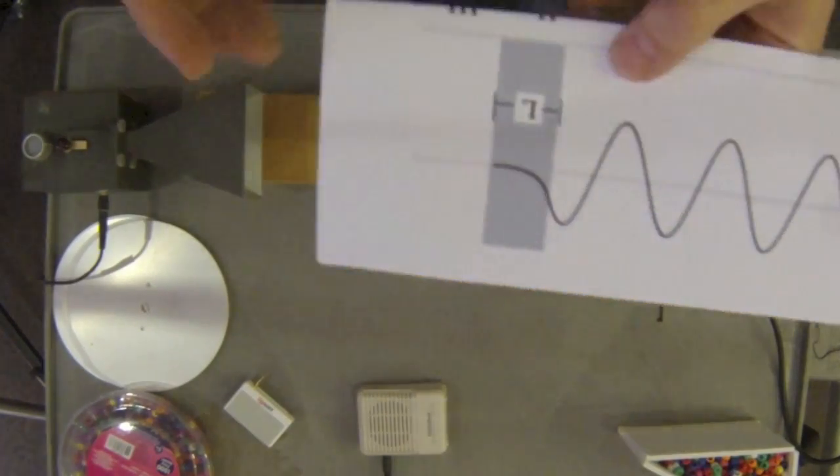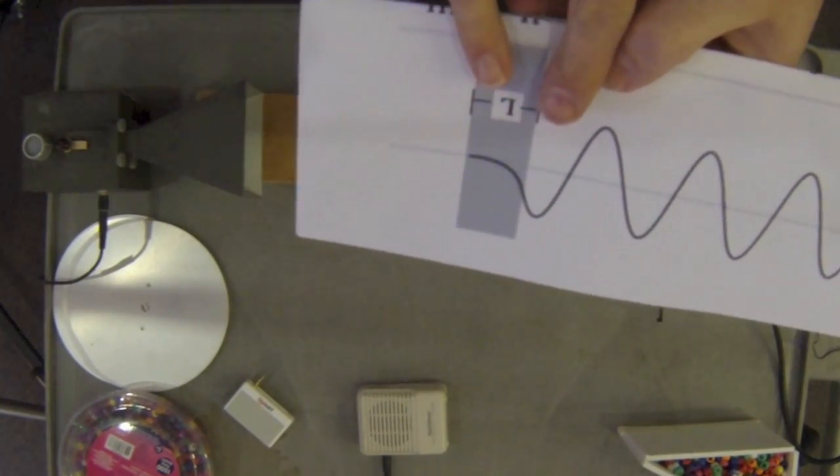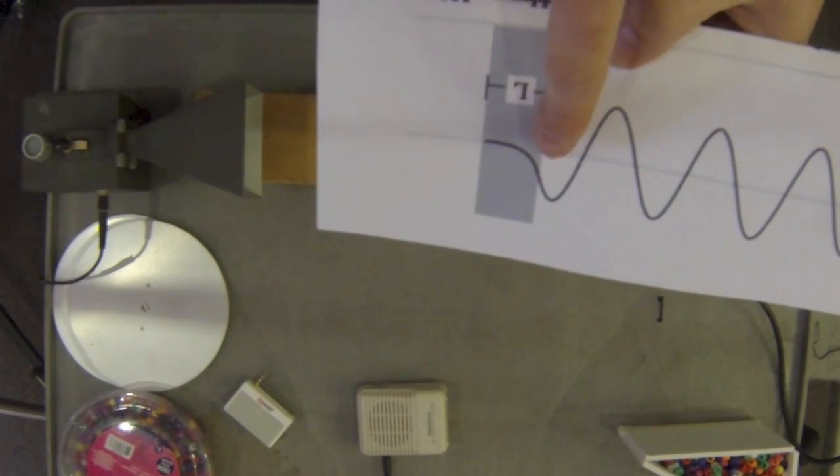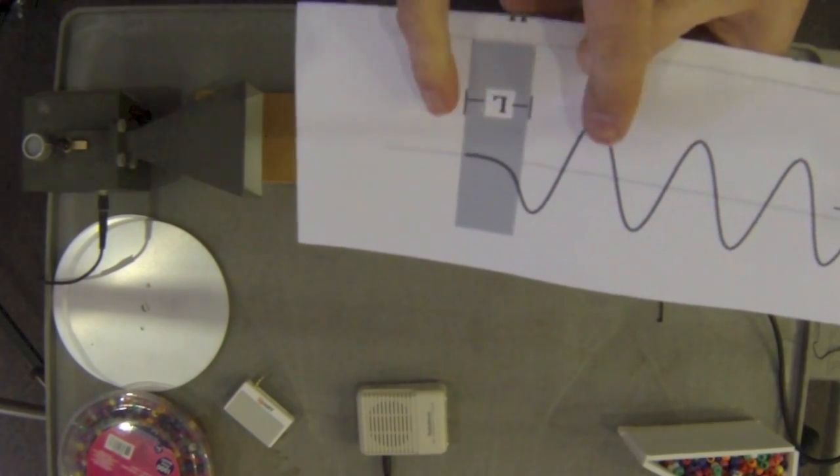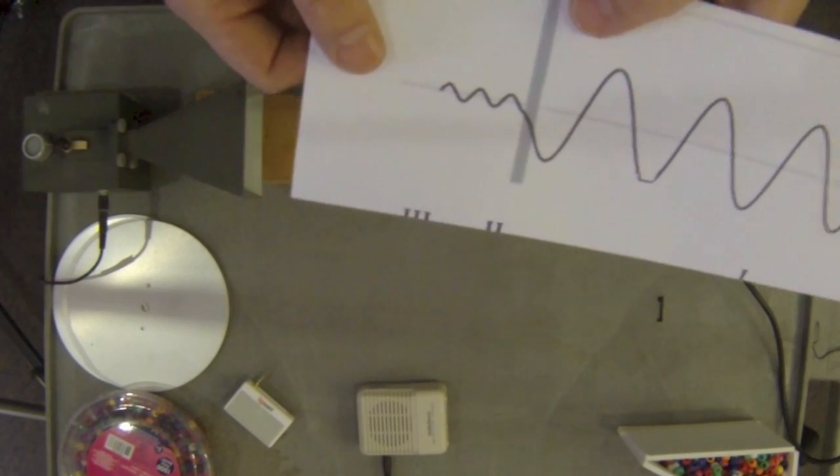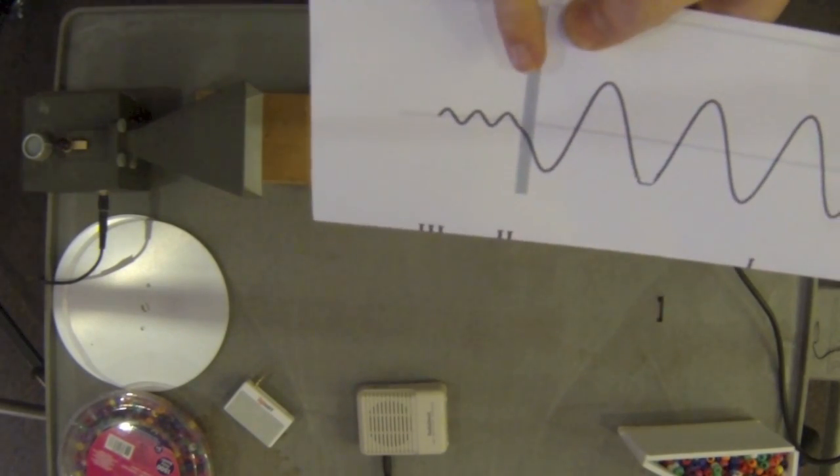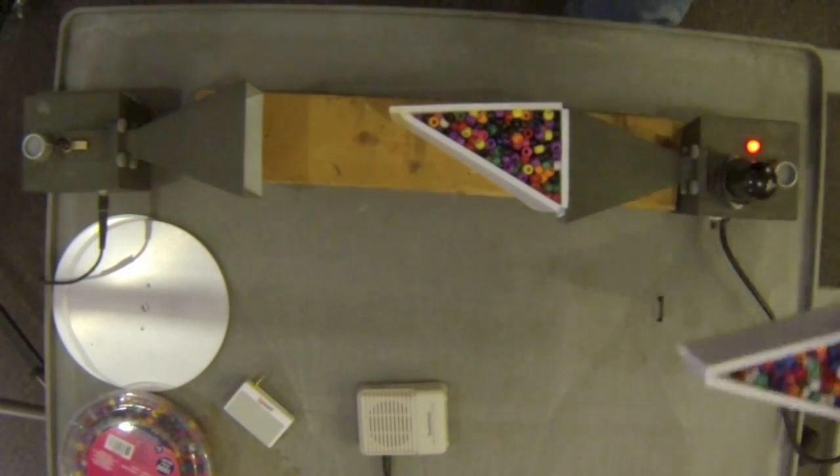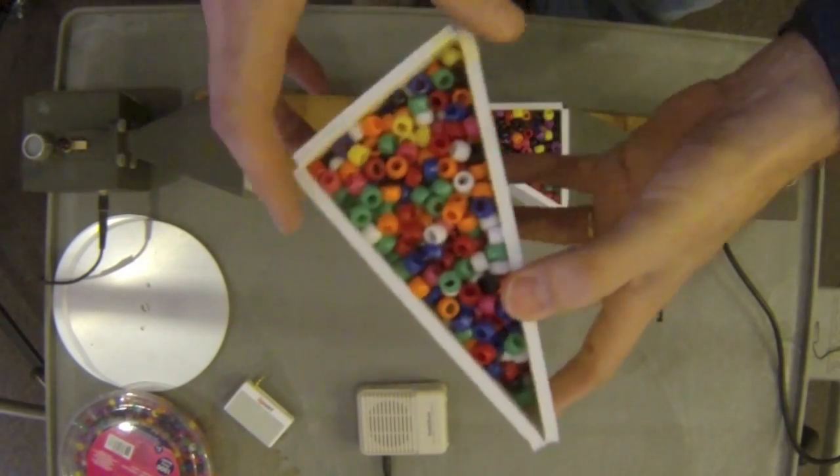However, if we would change the length of this material, you can see there's still some probability inside the barrier. If we change the width of that material, you can get a wave out. So I'm going to do this by putting in another prism.